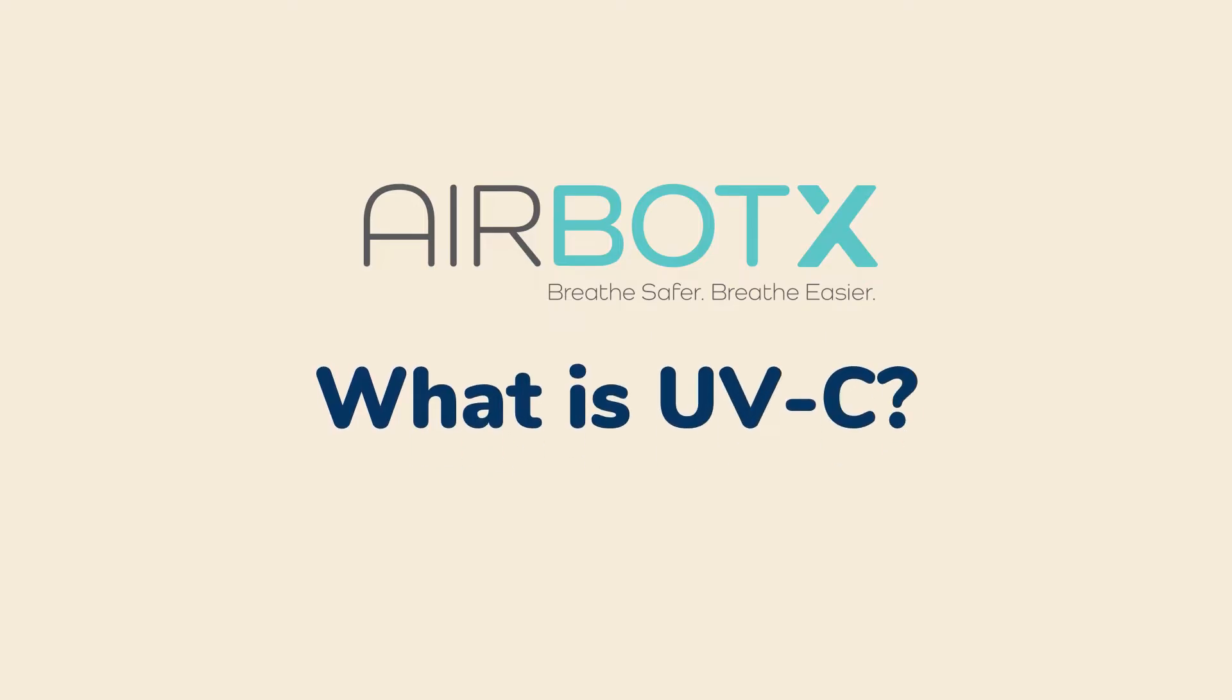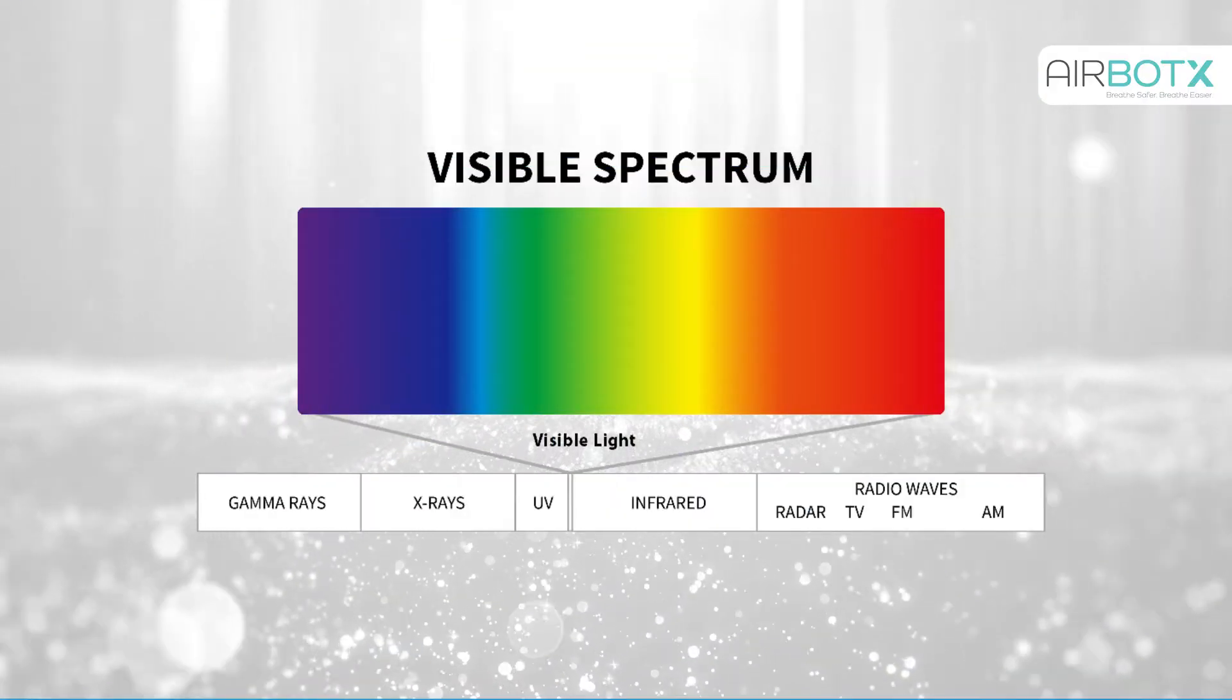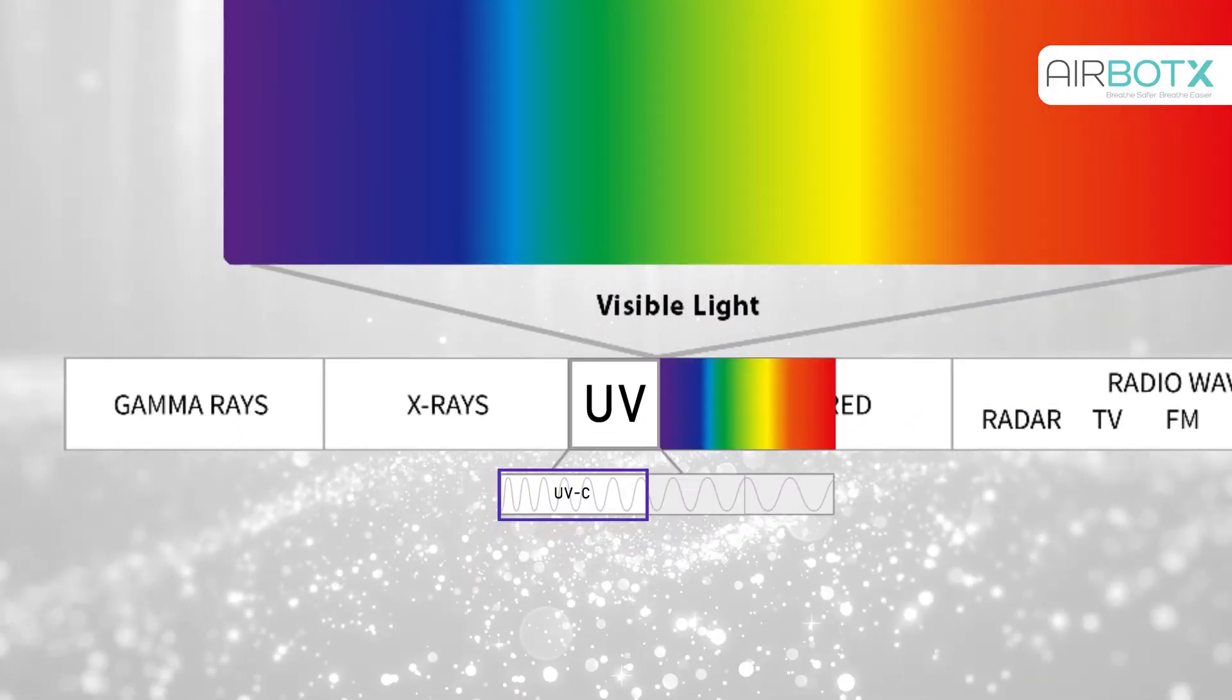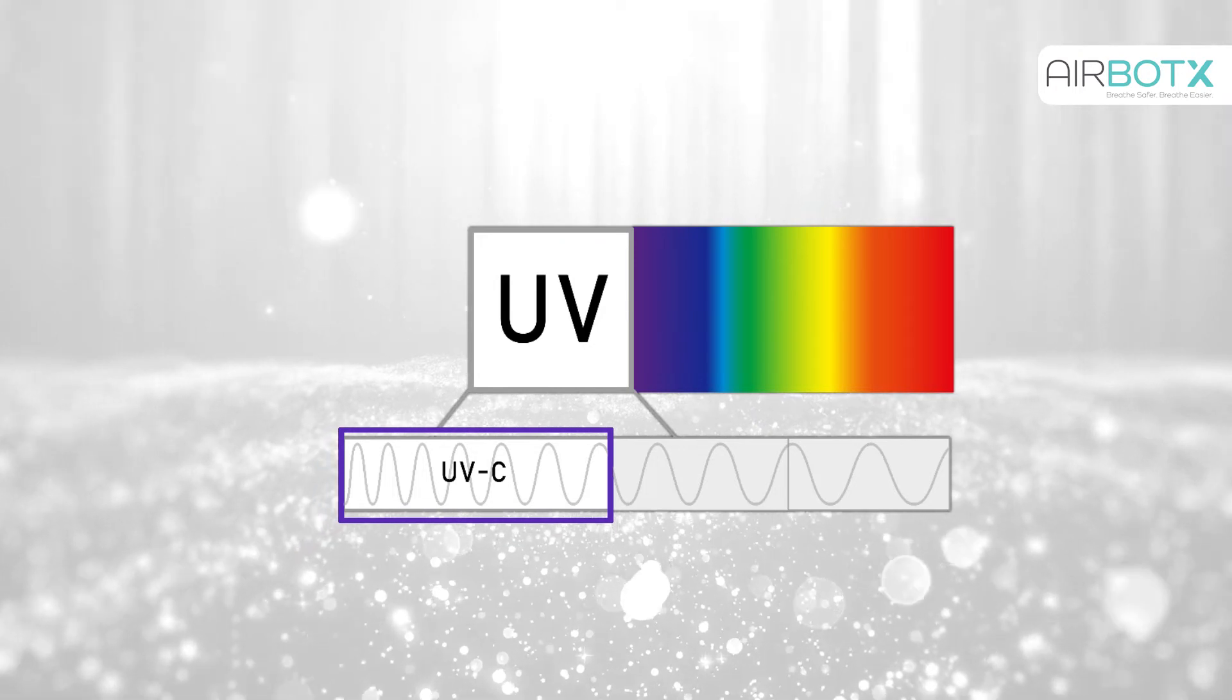What is UV-C? UV-C refers to a specific ultraviolet wavelength. UV-C is ultraviolet light using wavelengths in the C-range.